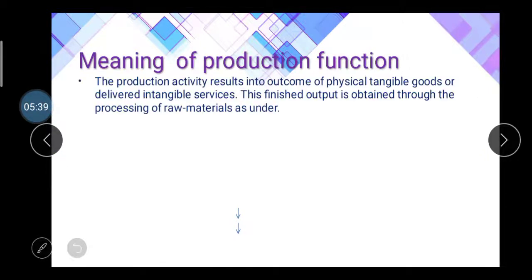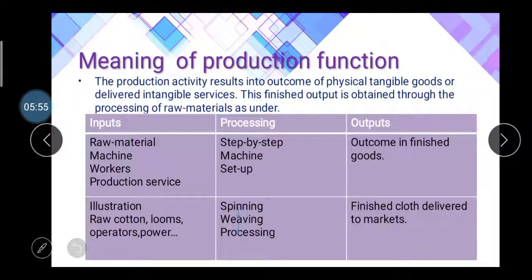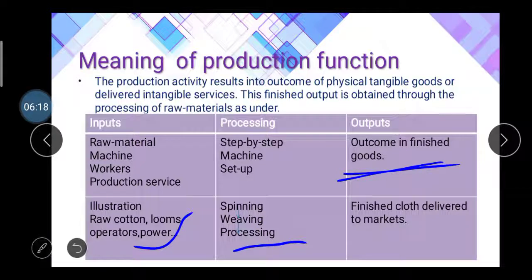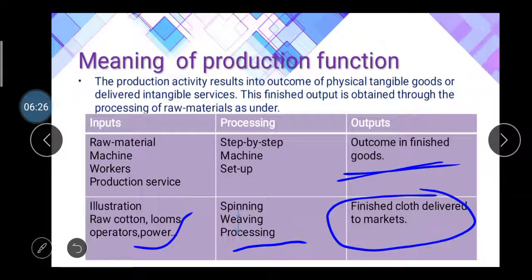The meaning of production function: production activities result in physical tangible goods or intangible services. This finished output is obtained by processing raw materials. For example, inputs include raw materials, machines, workers, and production services; after step-by-step processing through machinery and setup, the output is finished goods — illustrated by raw cotton converted into finished cloth.